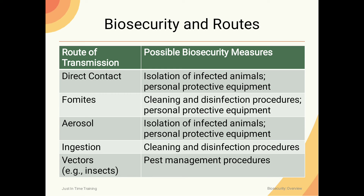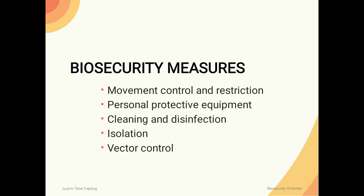Routes of transmission are: direct contact, vomiting, aerosols, ingestion, and vectors like insects. Possible biosecurity measures for direct contact include isolation of infected animals and personal protective equipment. For aerosols: isolation of infected animals, PPE, and cleaning and disinfection procedures. For vectors: pest management procedures for insects.